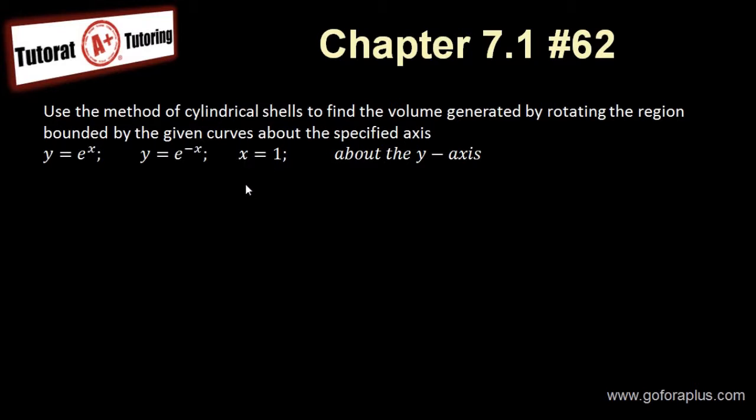So basically, we have to use integration by parts, and then we have to find one of the methods, which is cylindrical shell method, to evaluate a volume. This is in chapter 7.1, number 62 in Stillwork Textbook.